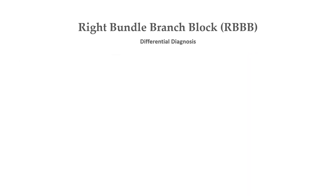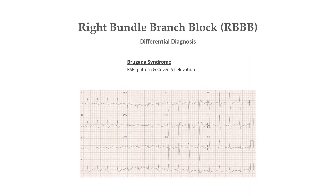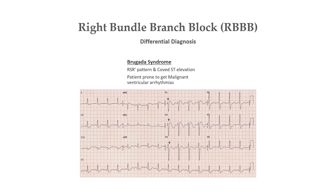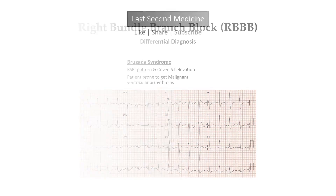Differential diagnosis of right bundle branch block includes Brugada syndrome, where an RSR pattern is also seen in V1 to V3. This condition needs to be identified because it is associated with malignant ventricular arrhythmias. That is it for this video — please like, share with your colleagues, and subscribe to this channel.